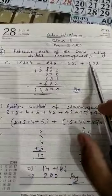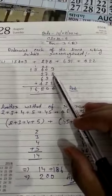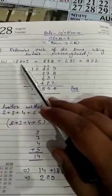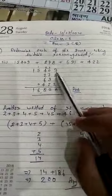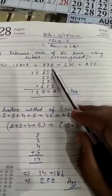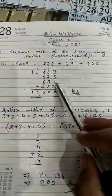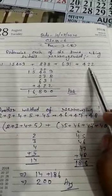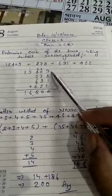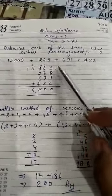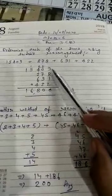First of all we need to write 15409, we have written it. After that we have written 278, after that 691, then 422. So after writing these numbers in proper order we need to add it.